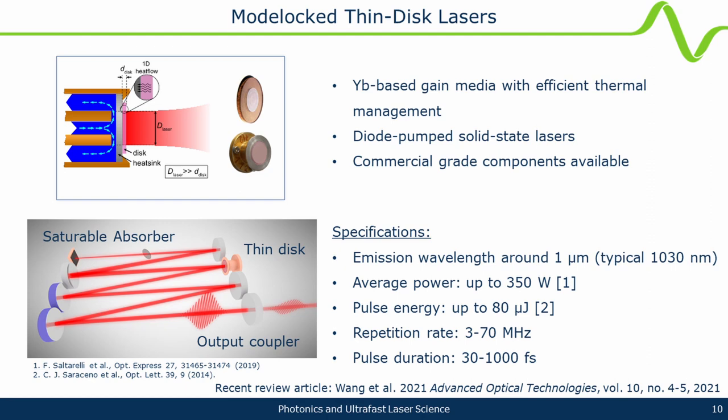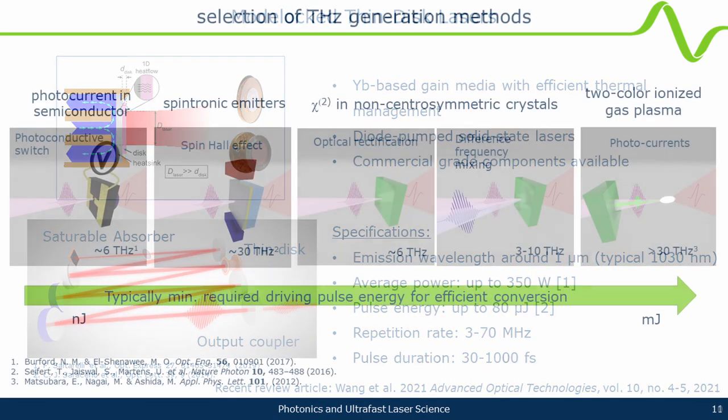With free-space large beams, average power and energy can be scaled up quite a lot. At the state of the art, these lasers emit at one micrometer with average power demonstrated up to 350 watts, pulse energy up to 80 microjoules, rep rates from roughly three to 100 MHz, and pulse duration from 30 to 1 picosecond. If you want very short pulses, you typically go down in power — so it's a bit application-driven.